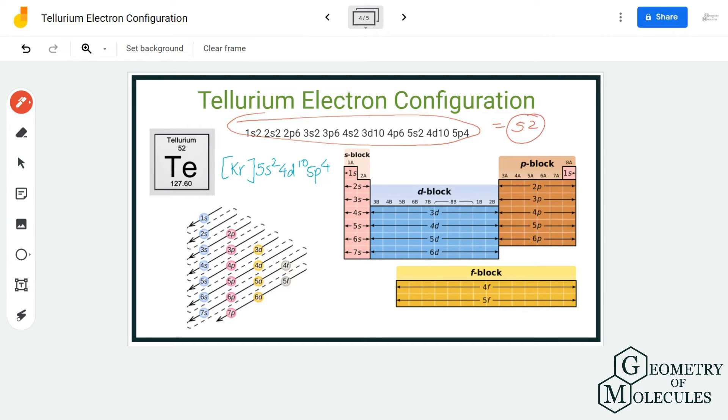This is the electron configuration of tellurium, and you can also write it another way which is Kr 5s2 4d10 5p4. Generally what we do is we take the electron configuration of the nearest noble element and we put that into the bracket and then write the electron configuration after it.